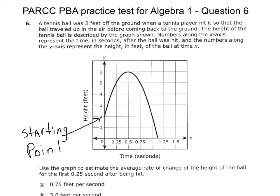So the y-intercept in real life is the starting point. And so let's go back. A tennis ball was two feet off the ground when a tennis player hit it, so the ball traveled up in the air before coming back to the ground.